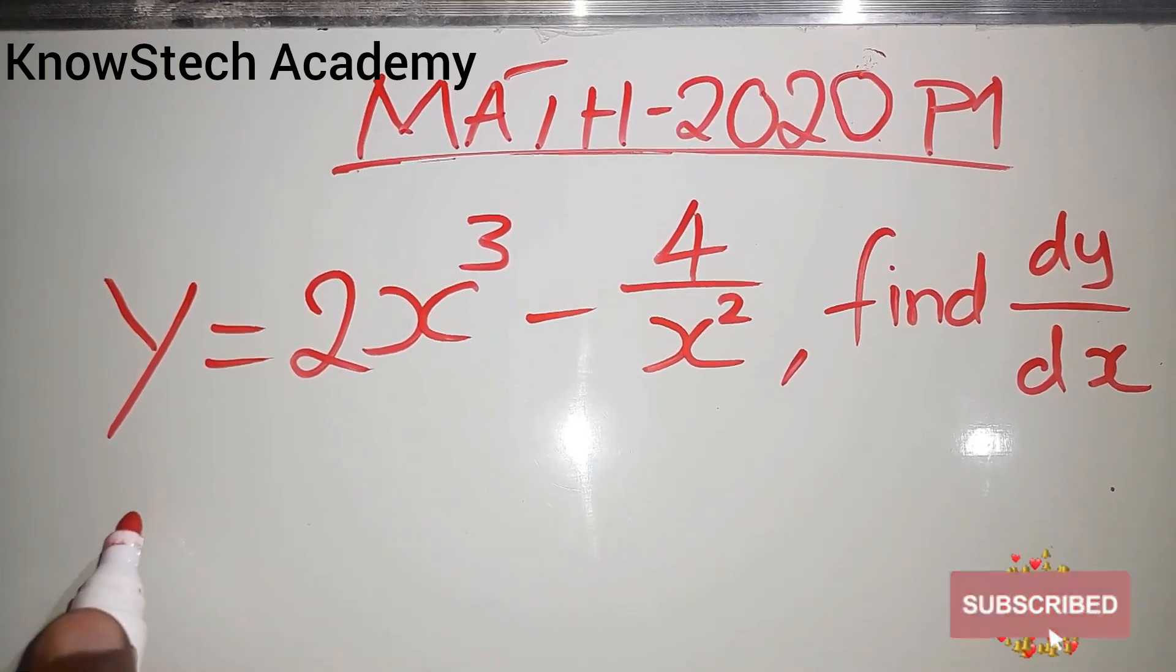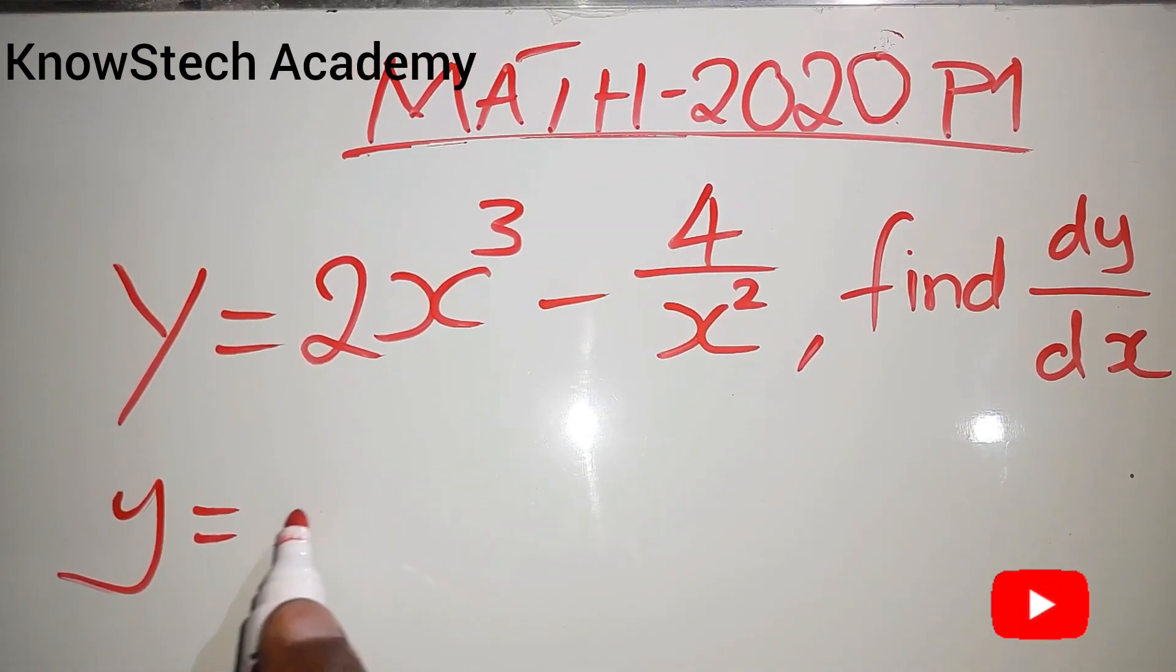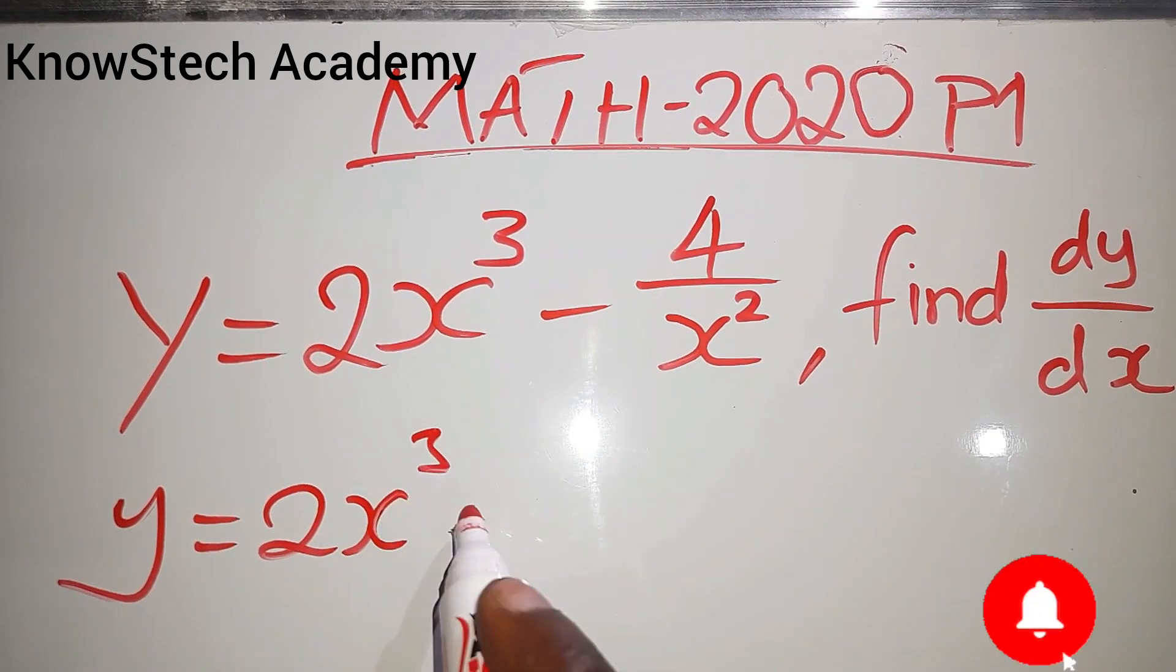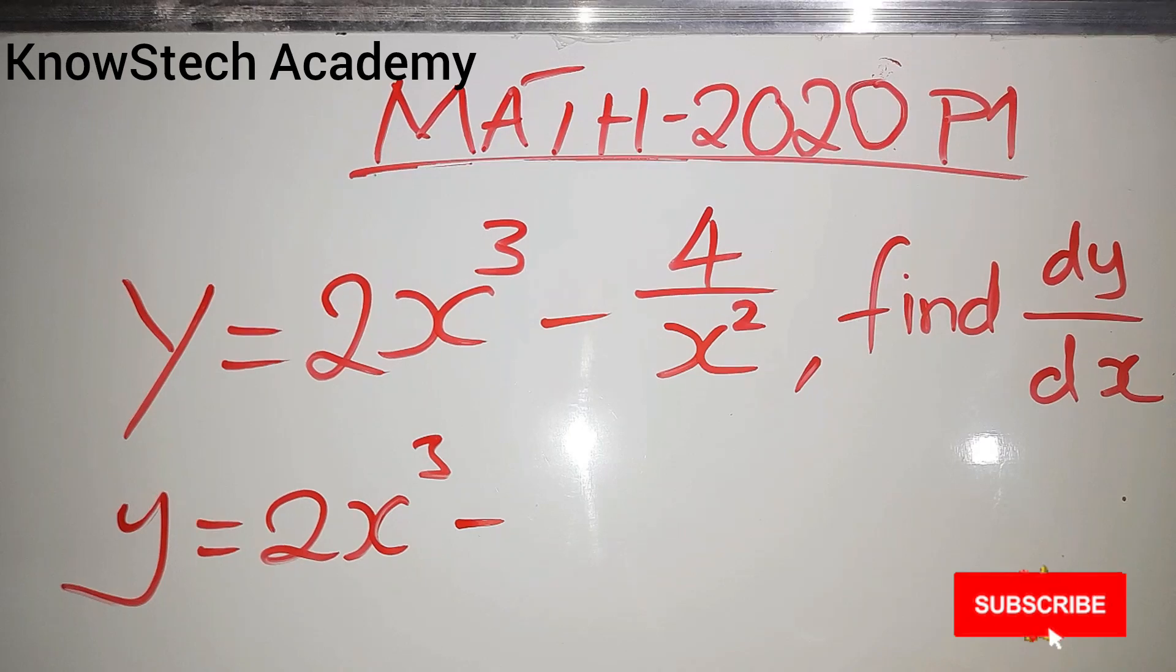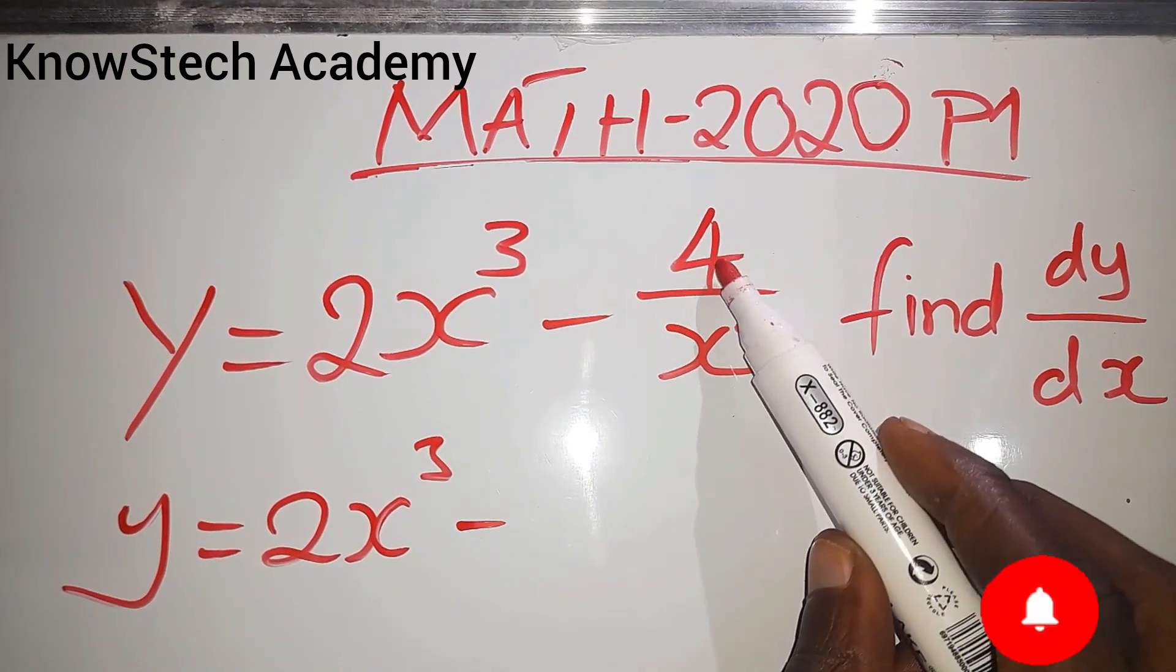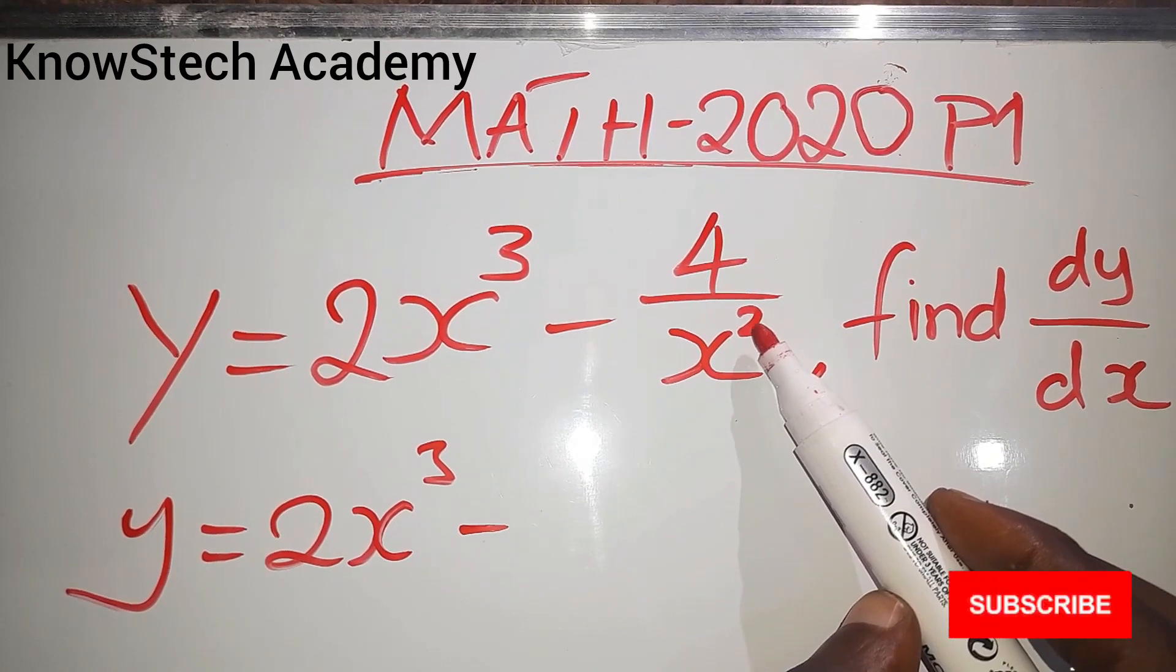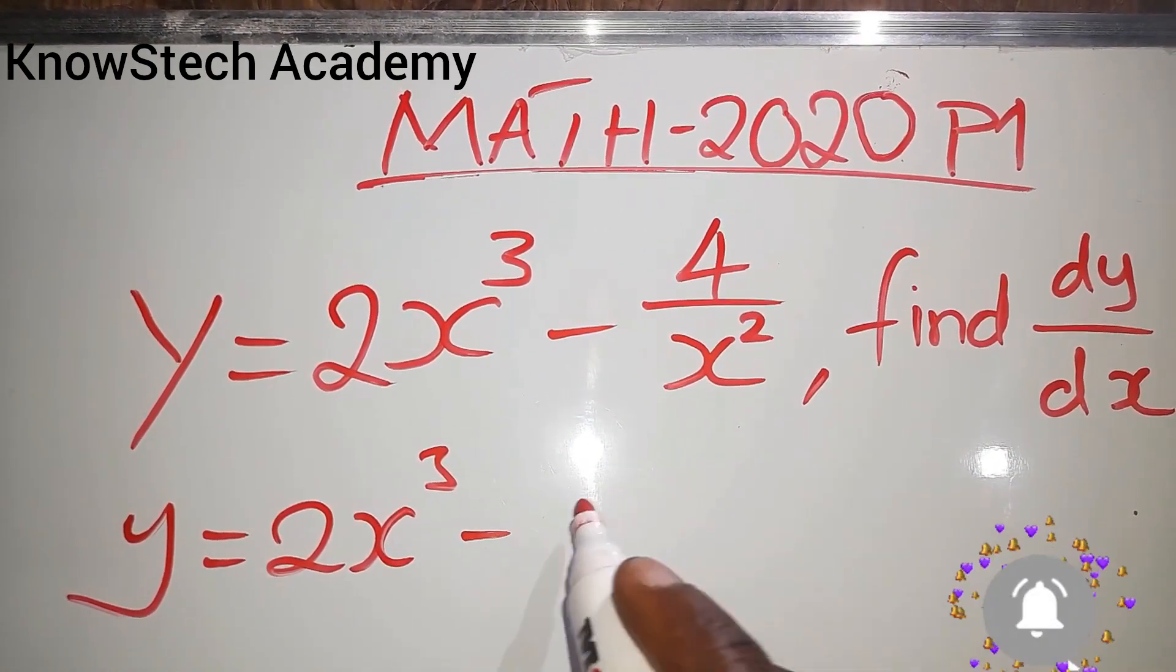This term is in standard order which is x to the power 3. Now this 4 over x to the power 2 is not in standard order. So this 4 over x squared means that the exponent was negative. This one can be written as 4x to the power negative 2.